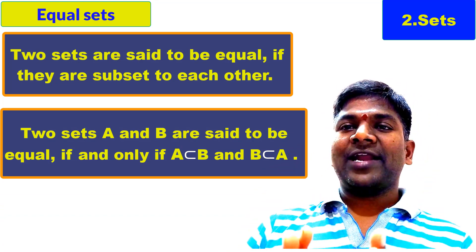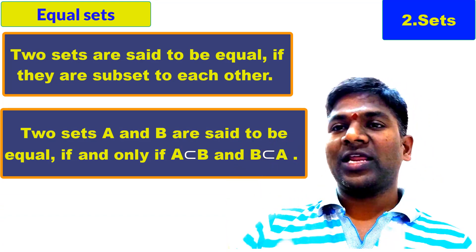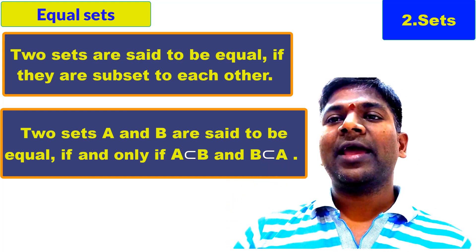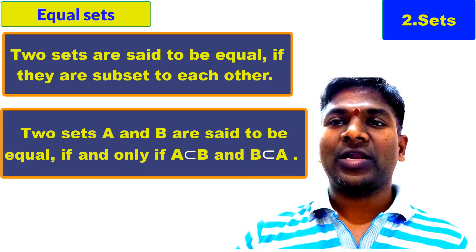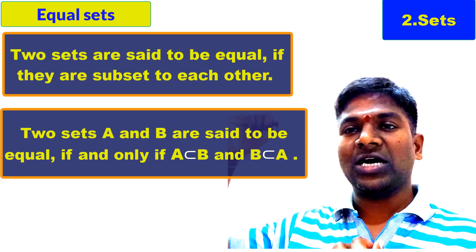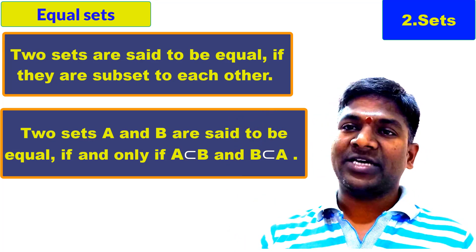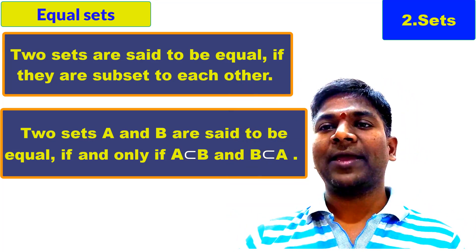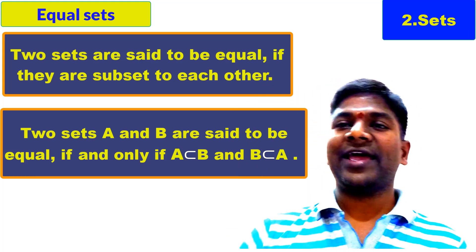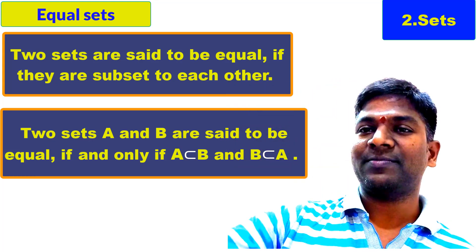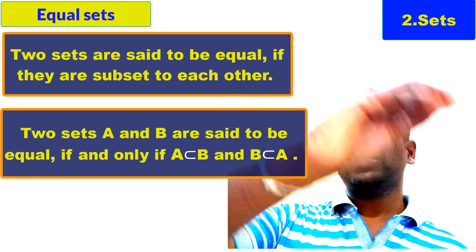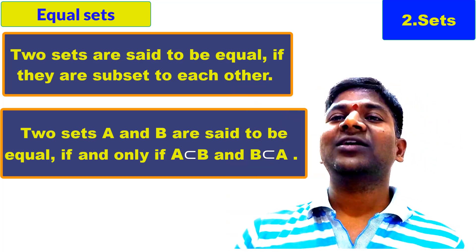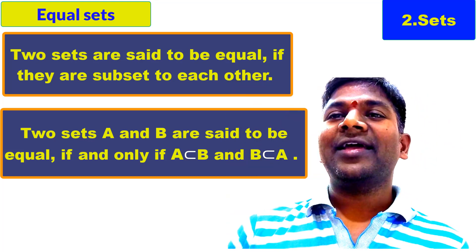Two sets A and B are equal if and only if A is a subset of B and B is a subset of A. You can see that condition on the screen. A subset B means all the elements of set A are in B. B subset A means all the elements of set B are in A. All the elements of A are in B and all the elements of B are in A — that means nothing but both sets are equal.